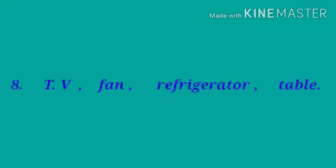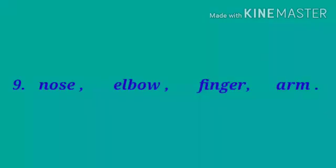Number 7: M, K, 4, P. Number 8: TV, fan, refrigerator, table. Number 9: nose, elbow, finger, arm. Find out which one is odd.